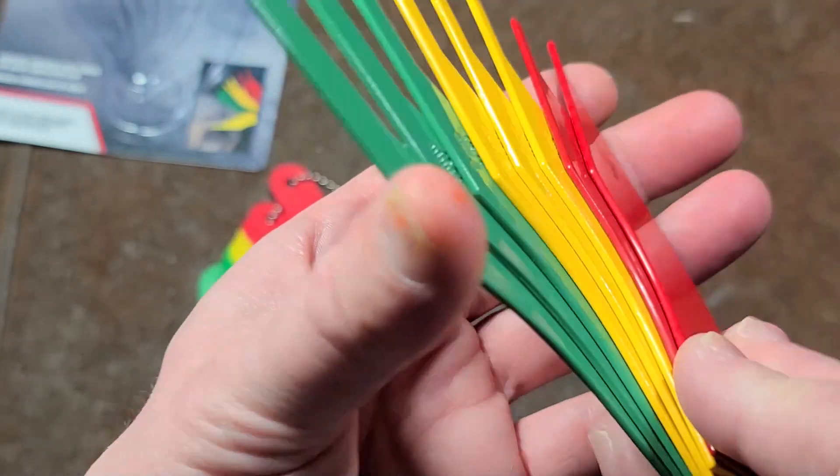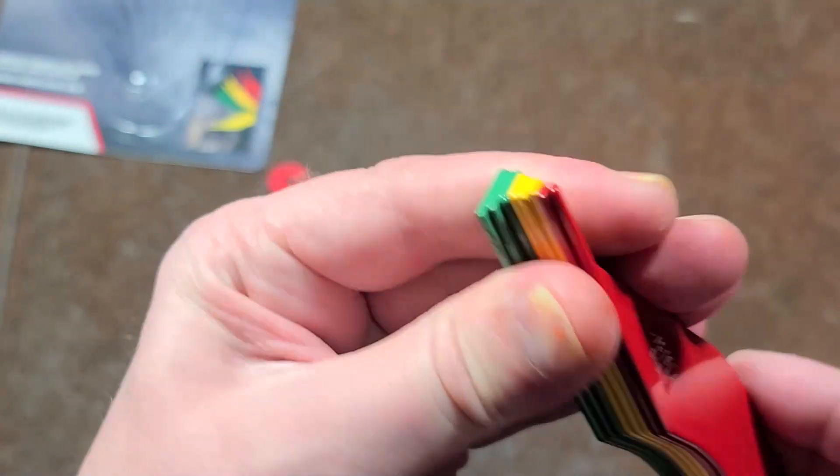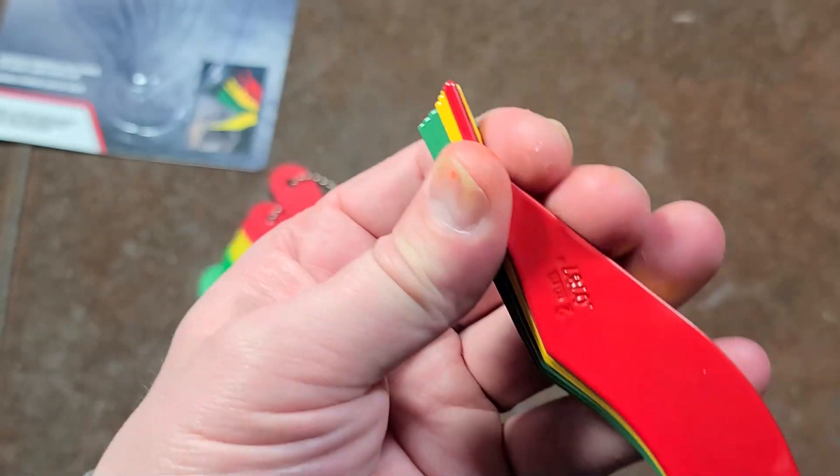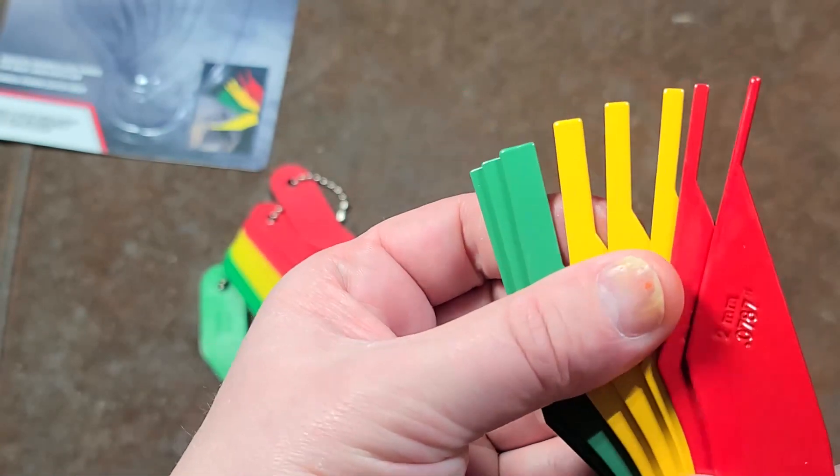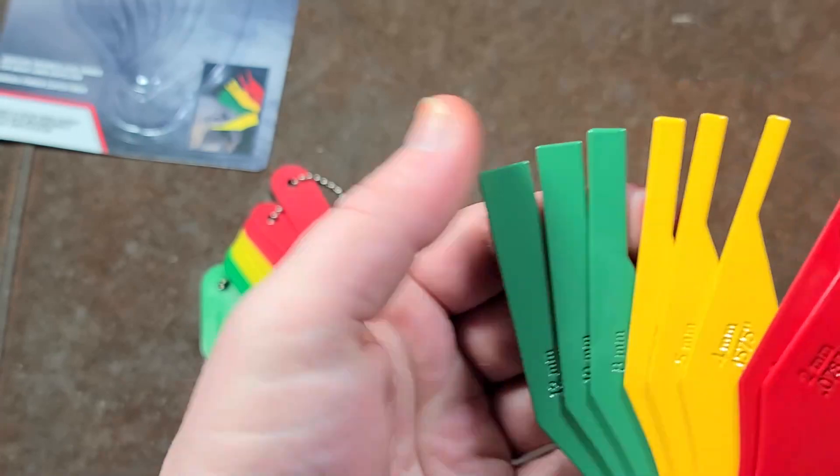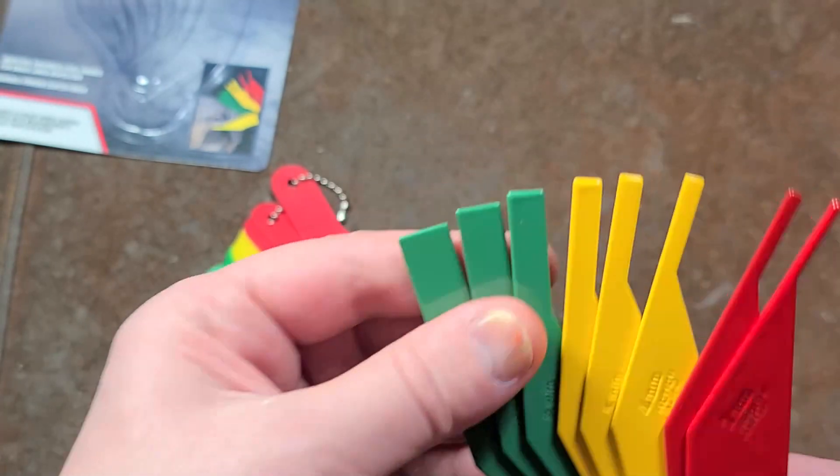Obviously red means too thin and they need to be replaced, yellow means they're getting down there, green means you still have some brake pad thickness left.